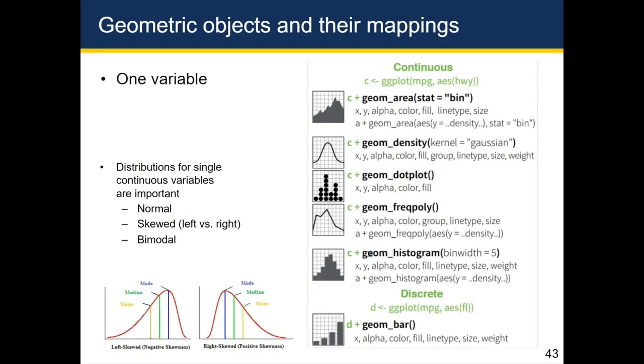If you're dealing with a continuous variable, then the top right are all the different geoms that you have available to you. But the most common ones that I tend to use are geom_histogram and geom_density. And below each of these geoms, you'll see a set of characteristics, which are the aesthetics that you can use to map back to the variables.